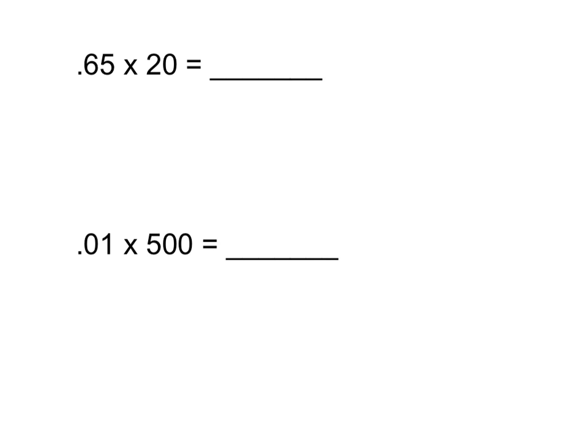Sometimes you will also encounter problems that work with powers of 10 that don't just involve 10, 100, and 1,000. Sometimes we'll be working with numbers like 20 or 500. Let's practice that. Using the same candy bar problem — the candy bars are 65 cents, but instead of a box of 100, the store only wants to buy 20. We're going to think about 20 as the same thing as 2 times 10. So first I need to multiply 65 hundredths times 10.